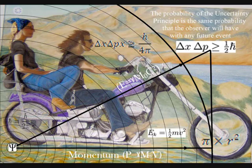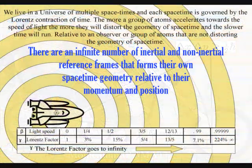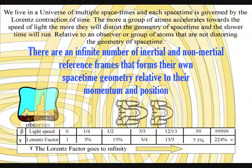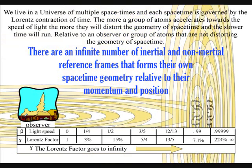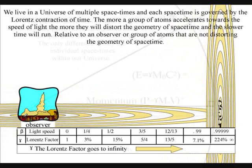In this theory, there is no universal time, because the universe is made up of an infinite number of reference frames that have their own proper time relative to their momentum and position.